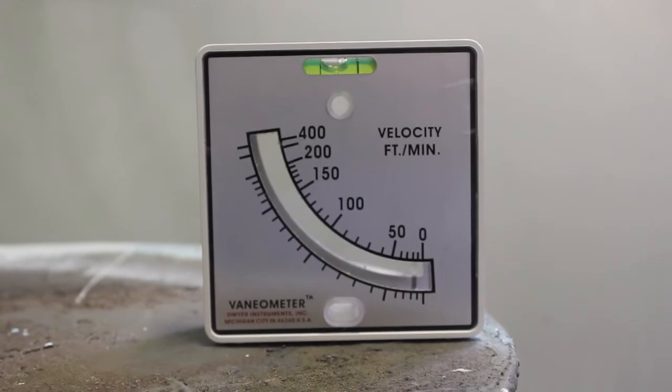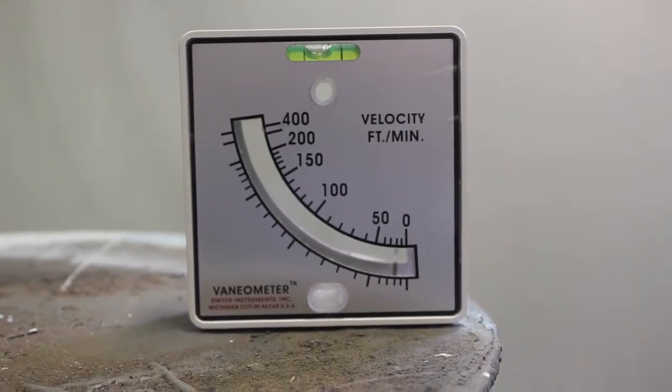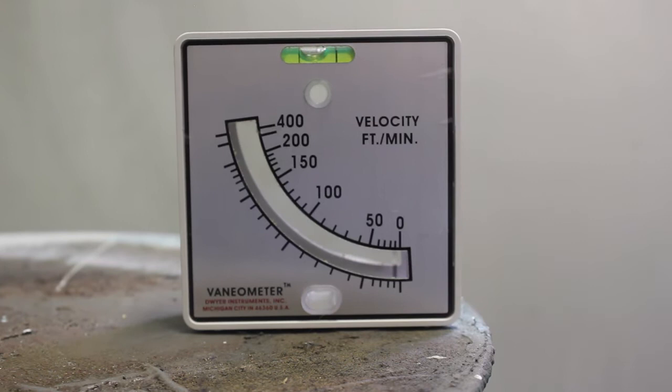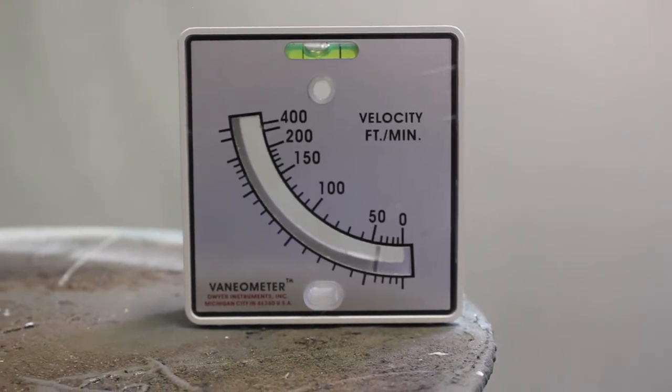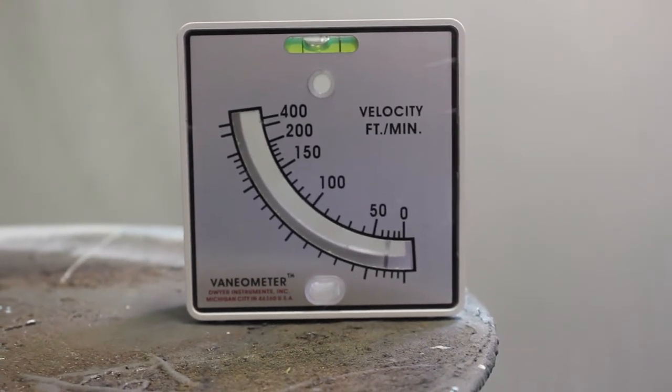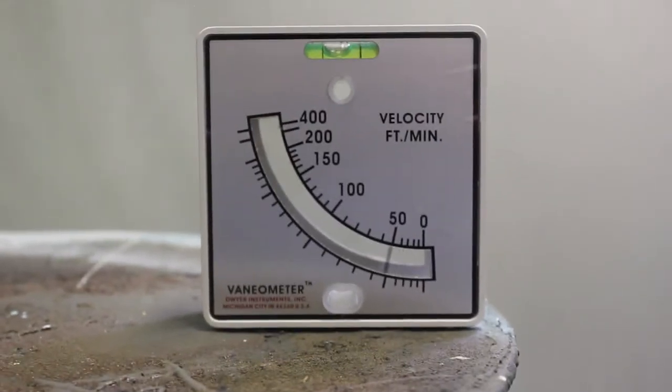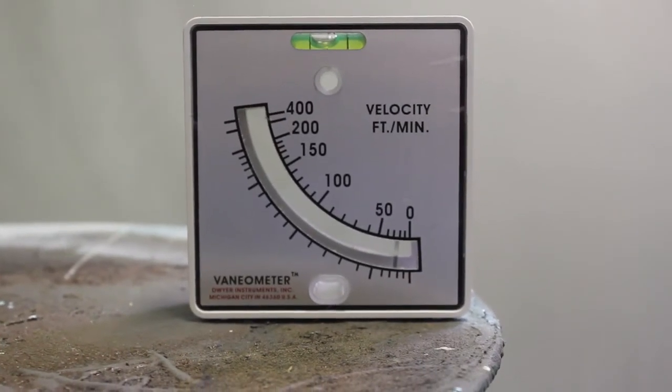Alright, we have the Venometer in the paint booth. When you do these measurements, you'll be doing this in a few different areas of the booth to make sure you're getting relatively equal draw across your booth, which in a properly designed booth, the airflow should be relatively consistent in all areas.